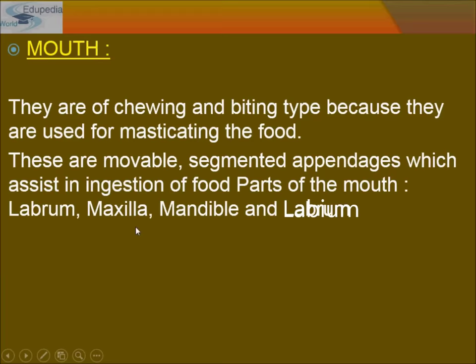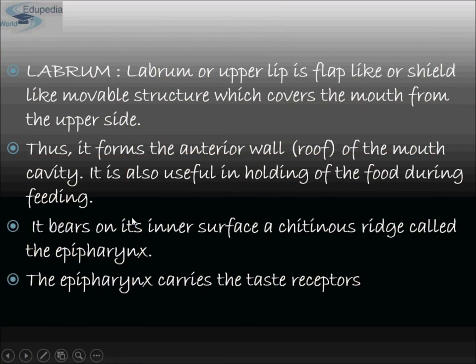Labrum is also known as the upper lip. It is flap-like or shield-like, movable, and covers the mouth from the upper side, forming the anterior wall of the mouth cavity. It is useful in holding food during feeding. On its inner surface it bears a chitinous ridge called the epipharynx, which carries taste receptors.